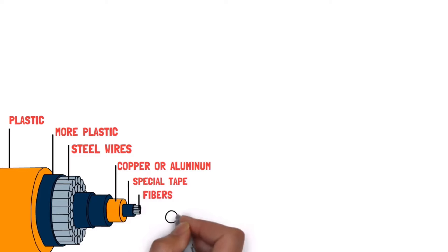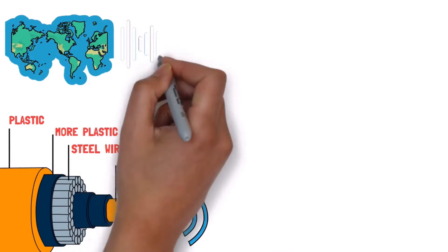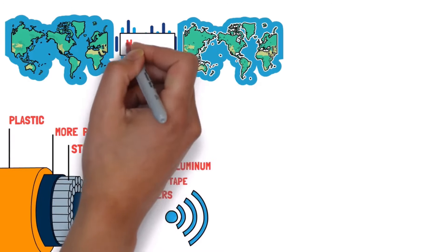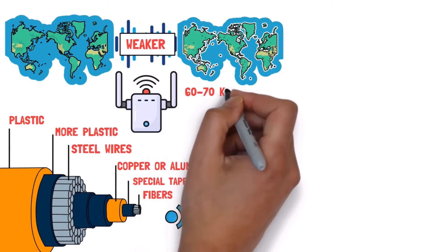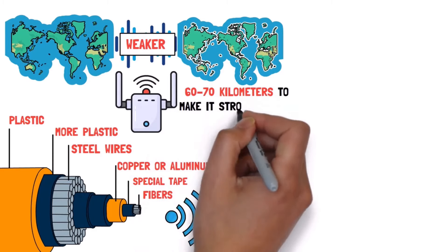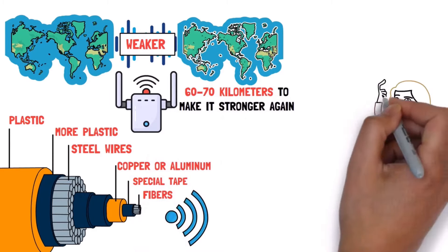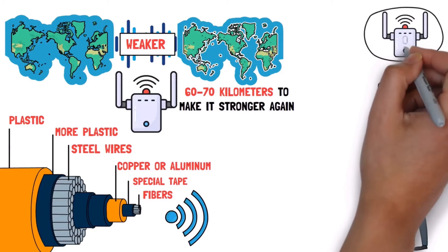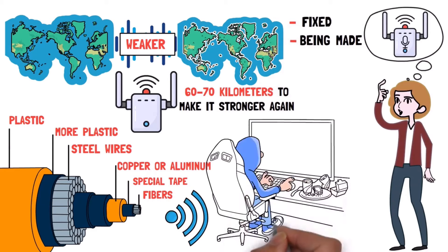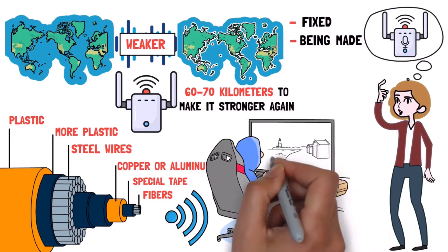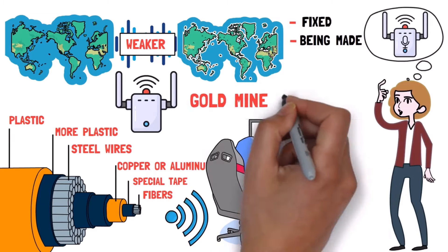But when the signal goes a really long way, it can get weaker. So they have to use a device called a repeater every 60, 70 kilometres to make it stronger again. Some people think these repeaters could be used for spying when they're being made or fixed. Others say that spy agencies can watch the cables at the places where they come ashore, like a gold mine for spying.